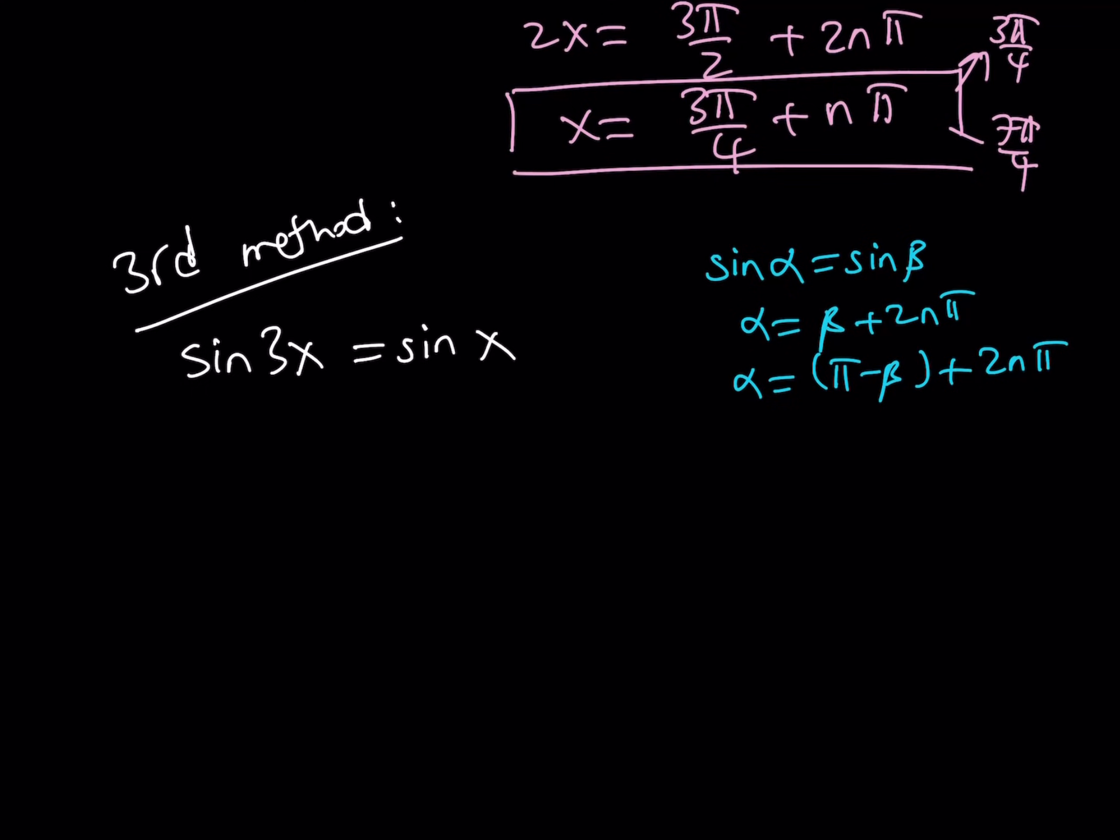they're supplementary angles, not complementary. They are up to 180 in degrees. Okay, great. So, from here, I can safely say that 3x is equal to x plus 2n pi. If I subtract x, I get 2x equals 2n pi, which means x equals n pi. And, we found the same solution before, obviously.